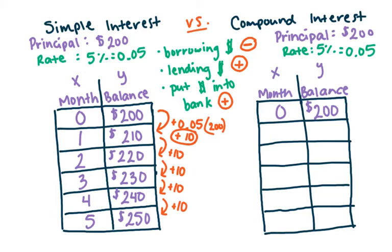Now compound interest is more complicated. Compound complicated. You can remember it that way if you'd like. Now to get the first month's balance, I do add the $200 times your rate. So it'd be adding 0.05 times 200. And that is adding 10. So now I'm going to have a balance of $210.